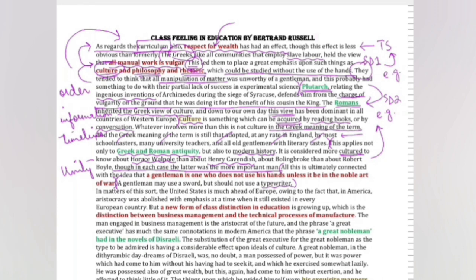Critical reading hamne yeh batati hai ki paragraph kis cheez ke baare mein hai. The information that we get is the way in which wealth has been respected in different societies. And the example of Greek society, Roman society and modern society has been given. Now let's move to the other paragraph. In matters of this sort the United States is much ahead of Europe owing to the fact that in America aristocracy was established with emphasis at a time when it still existed in every European country.